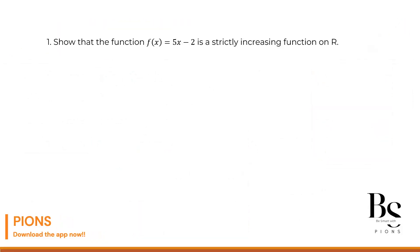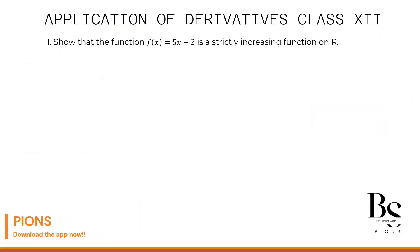Let's start with question number 1. Question 1 says: show that the function f(x) = 5x - 2 is strictly increasing on the real numbers ℝ. This is a linear function. For linear functions, we simply say: let us assume x1 is greater than x2.